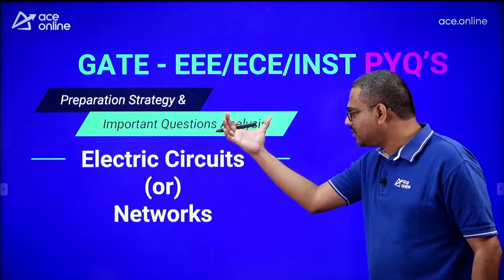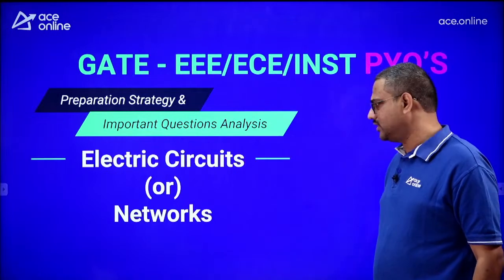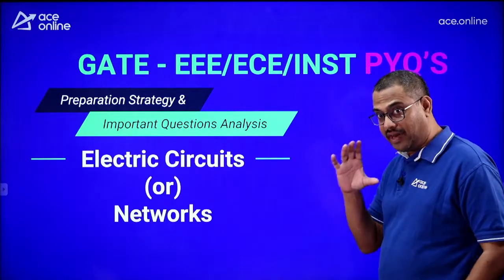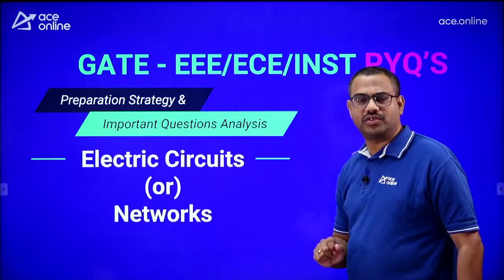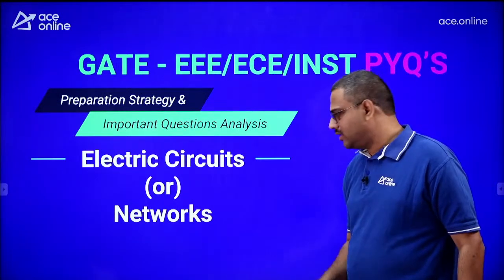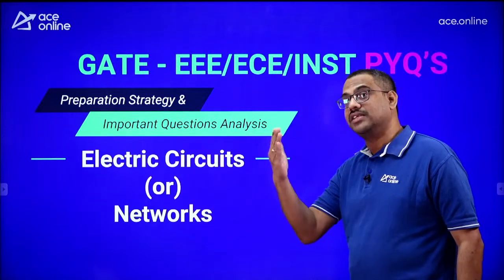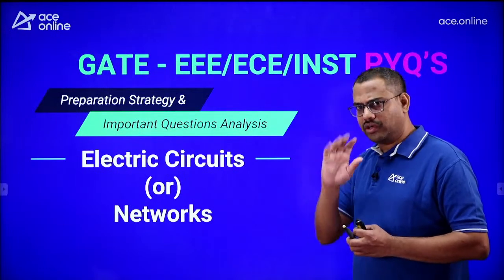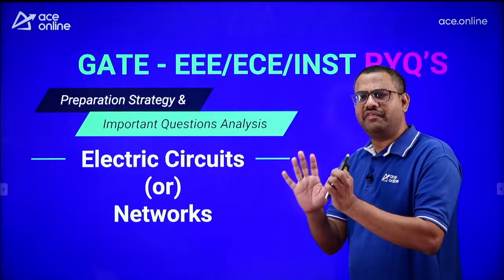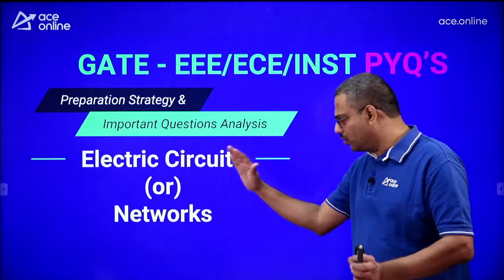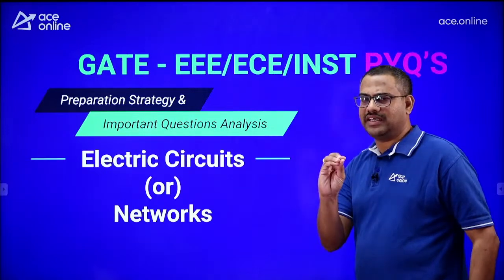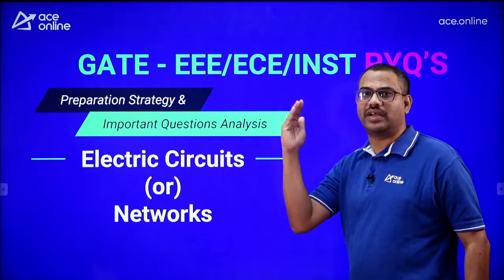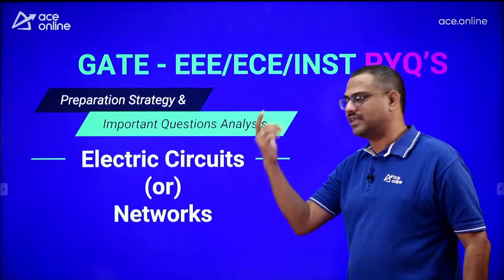The subject is called 'Electric Circuits' for EE and Instrumentation, and 'Networks' or 'Network Analysis' for ECE. About 95% of the syllabus is the same for both EE and ECE. Only about 5% differs — three-phase circuit analysis is extra for EE students, and power level analysis is more emphasized for EE, otherwise 95% is common.